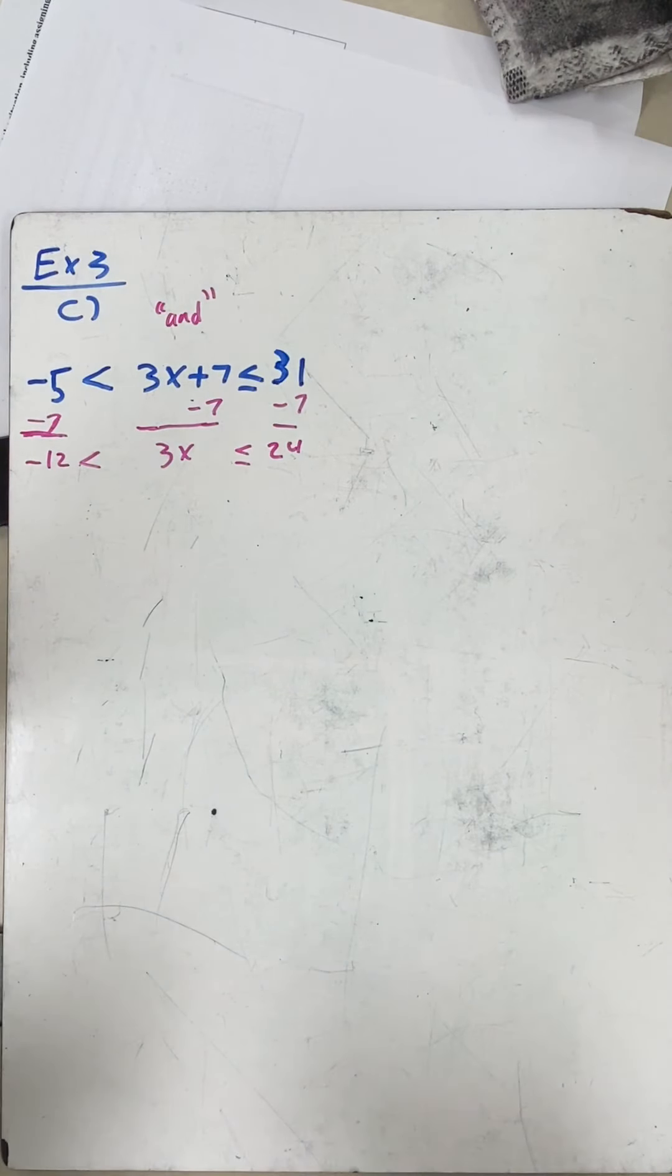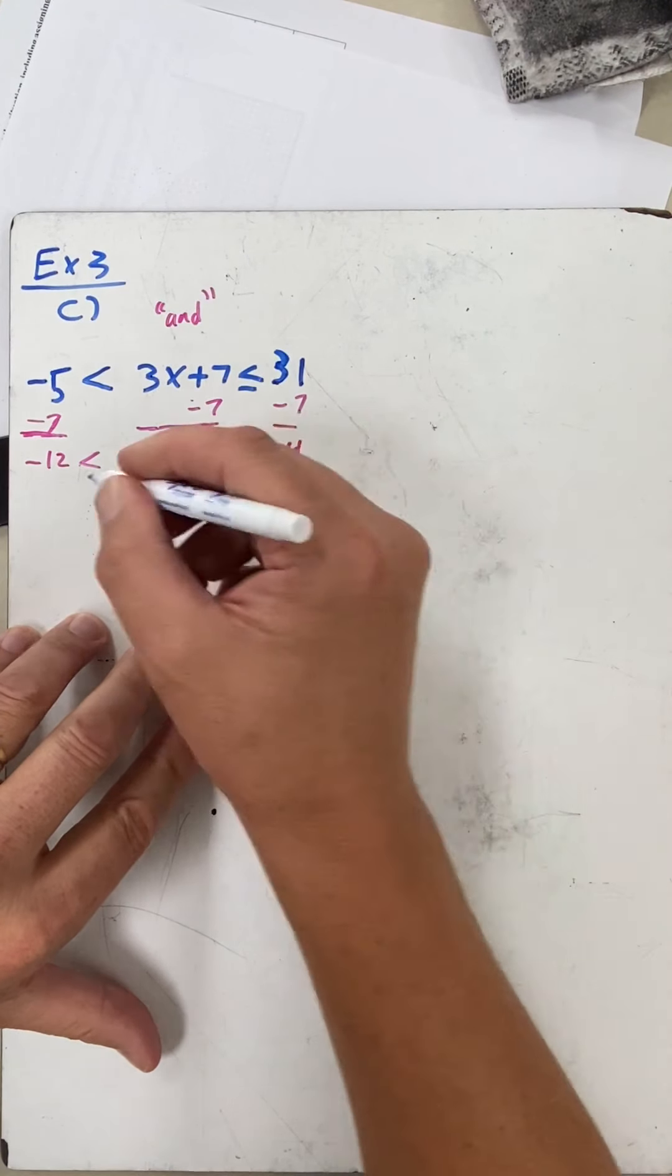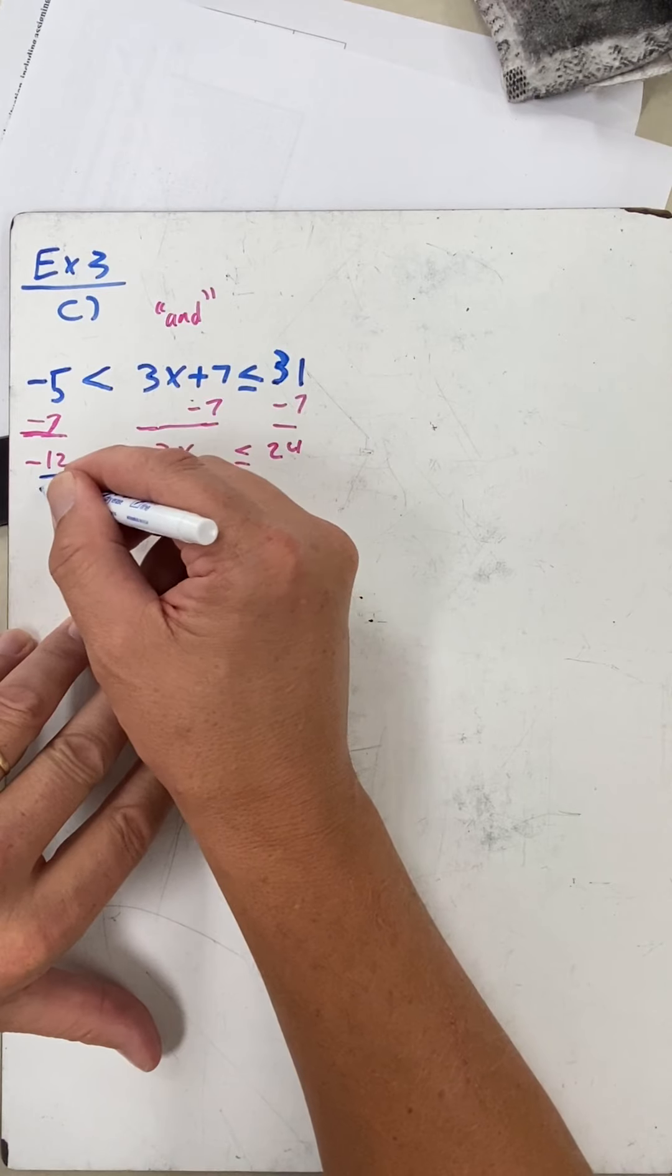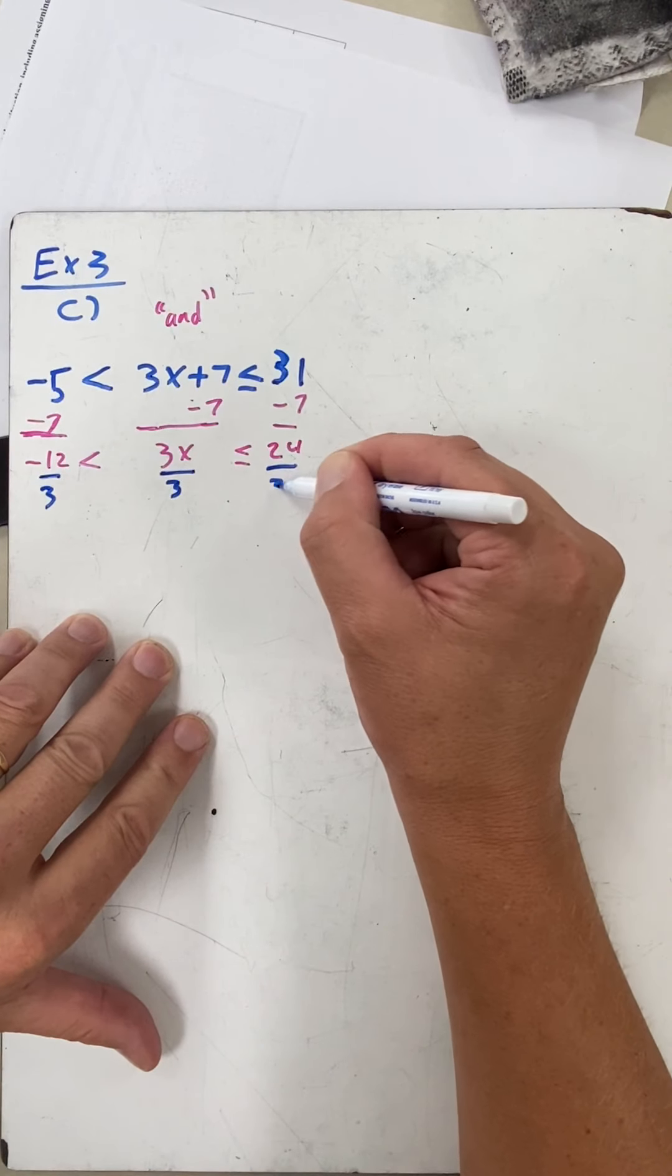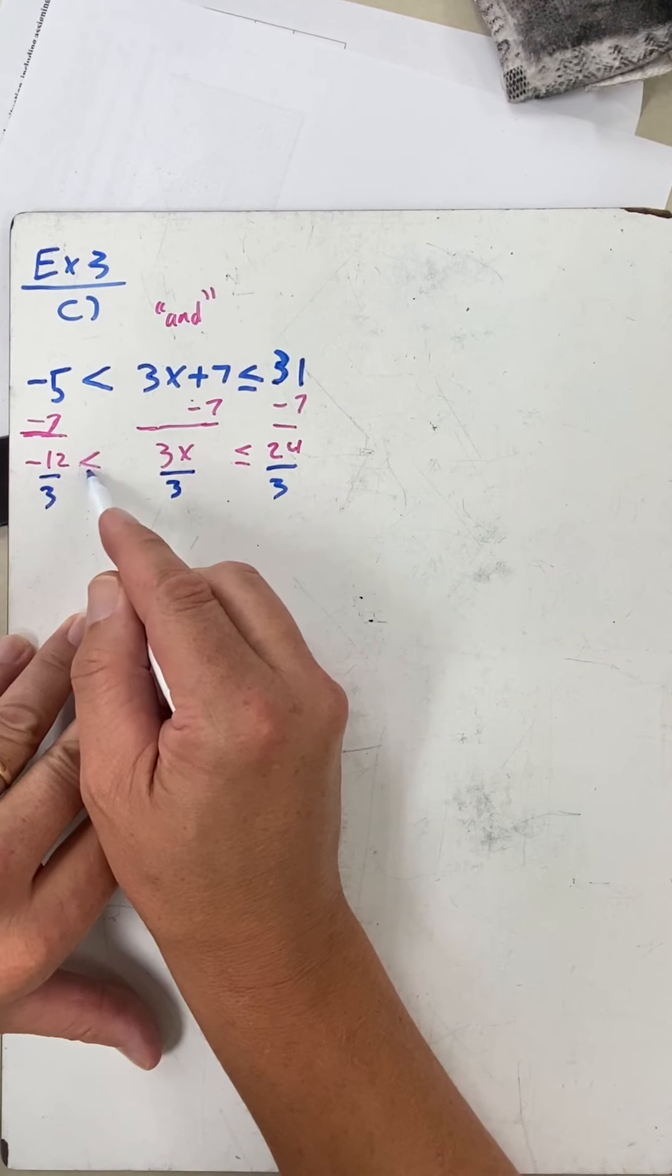Now we are going to divide by three to get x by itself. Well, if I do it in the middle, I have to do it on the left, I have to do it on the right. Now right here I have a negative twelve, but I'm dividing by a positive, so don't make the mistake of flipping this.